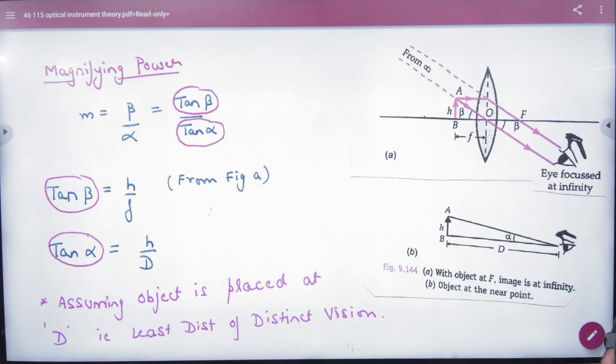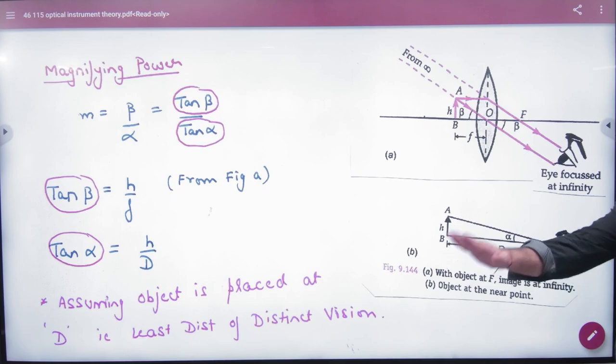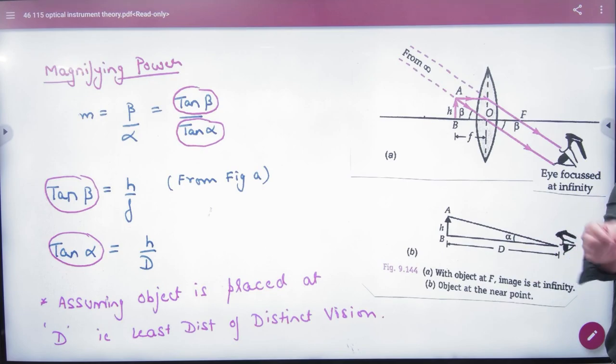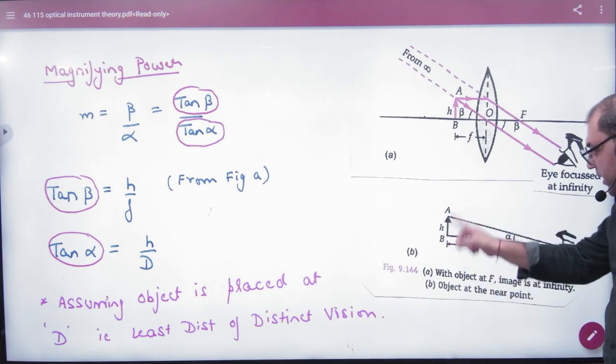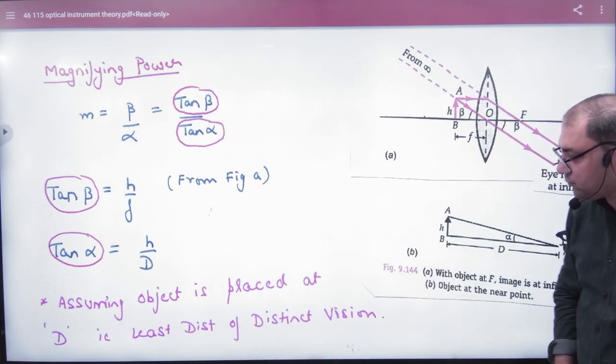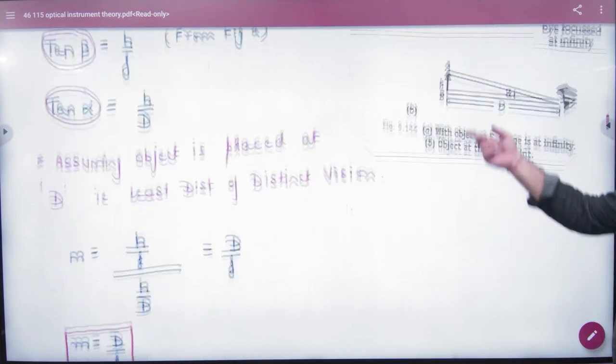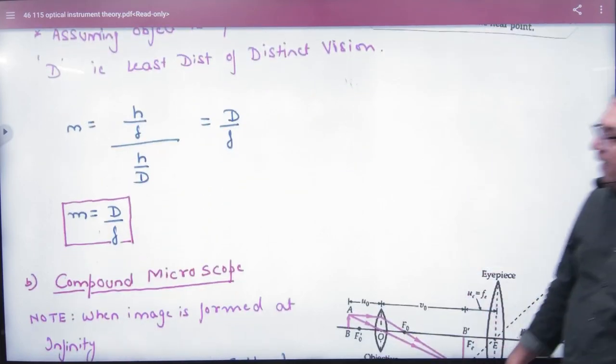For tan alpha object, no lens. What is the value of the eye on its distance? D. That means the distance is where the object wants to keep it. And this is H by D. Tan alpha equals H by D, where D is least distance of distinct vision. Tan alpha and tan beta values.